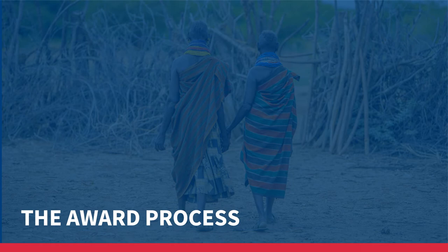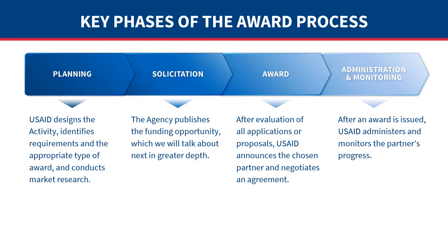This concludes our discussion of different types of USAID contracts and assistance awards. Now we will share information about USAID's award process. The key phases include planning, solicitation, award, and then administration and monitoring. In the planning phase, USAID designs the activity, identifies requirements and the appropriate type of award, and conducts market research. In the solicitation phase, the agency publishes the funding opportunity. After evaluation of all applications or proposals, USAID announces the chosen recipient and awards an agreement. After an award is issued, USAID administers and monitors the partner's progress.